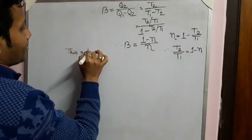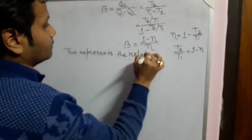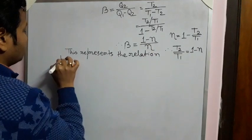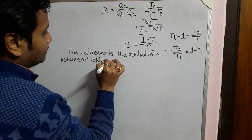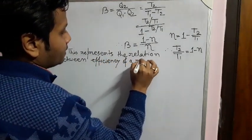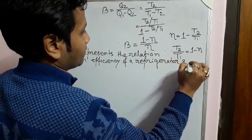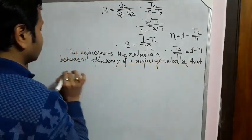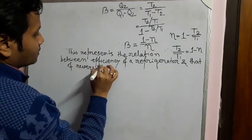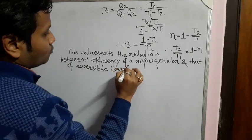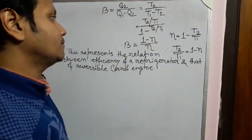This establishes the relation between the efficiency of a refrigerator and that of a reversible Carnot engine. So this is the first issue: the relation between eta and beta.